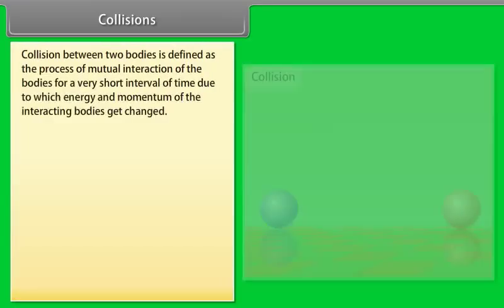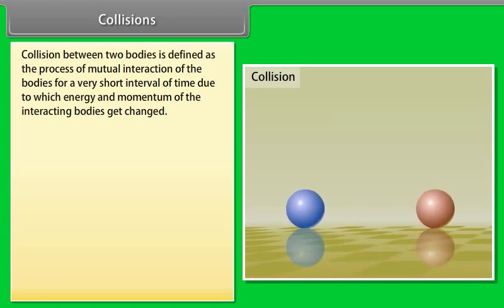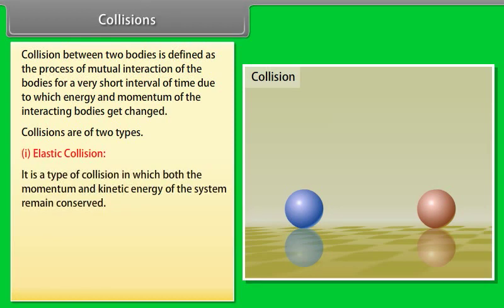Collisions: Collision between two bodies is defined as the process of mutual interaction of the bodies for a very short interval of time due to which energy and momentum of the interacting bodies get changed. Collisions are of two types: Number one, elastic collision. It is a type of collision in which both the momentum and kinetic energy of the system remains conserved.